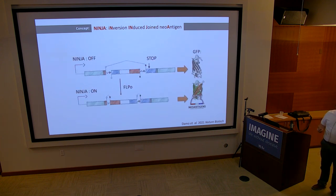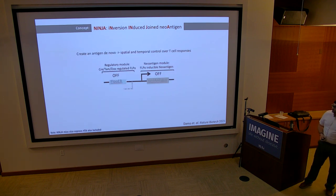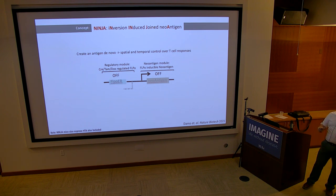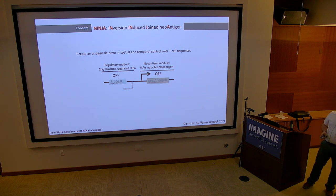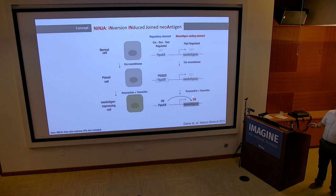NINJA has another nice feature: it's buried within a GFP molecule. When the antigen is off, the splice is out of frame, causing an out-of-frame stop so you get only half a GFP. When you give Flippase, this corrects the reading frame — you get full-length protein and GFP positivity, so you can tell which cells are antigen-positive. The regulatory module has three levels of control: Cre recombinase is required to cause recombination, and you also need to give doxycycline and tamoxifen to give full Flippase activity. You can poise the allele with Cre, then activate Flippase later with doxycycline and tamoxifen to study antigen-expressing cells.